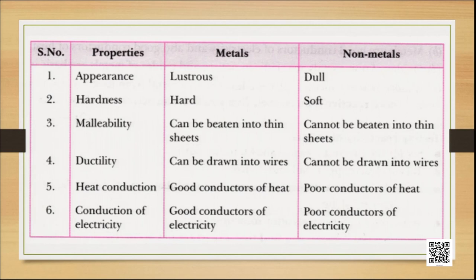Let us distinguish between metals and non-metals based on their physical properties. Looking at the table — appearance: metals are lustrous, meaning they have a shiny surface, whereas non-metals are dull in nature and do not have a shiny appearance. But chemistry is full of exceptions. Here, the exception is that iodine is a non-metal which has metallic luster — it has a shiny surface like metals.